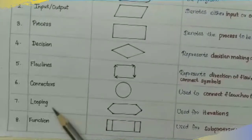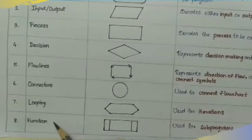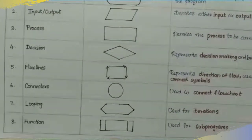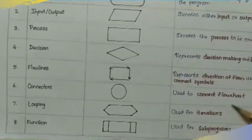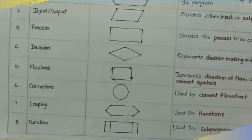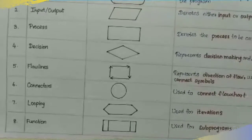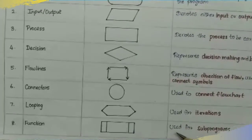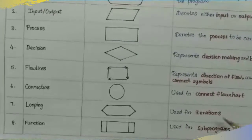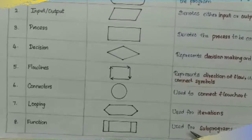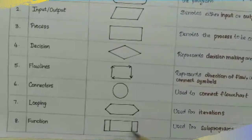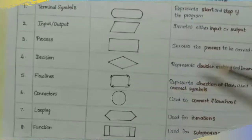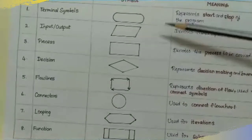Next are looping and function symbols. In a flow chart, these are used for iteration purposes and subprograms. These are the looping and function symbols. Let's look at all six symbols.